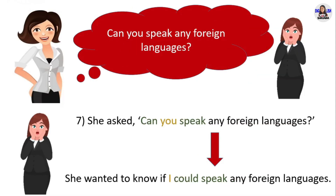Next example: 'Can you speak any foreign languages?' She asked 'Can you speak any foreign languages?' in direct speech. In reported speech, she wanted to know if I could speak any foreign languages. 'Can you speak any foreign languages?' is a yes/no question. When you report them, you can use either 'if' or 'whether' before the reported question. 'Can you speak' in question form changes into 'I could speak' in statement form. 'Can' changes into 'could.' 'You' changes into 'I.'